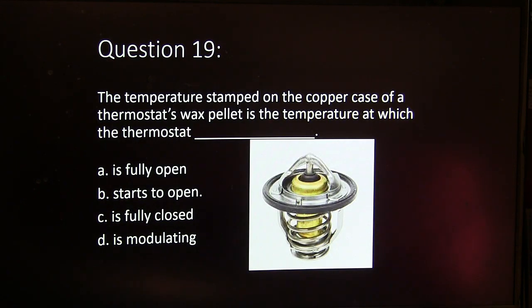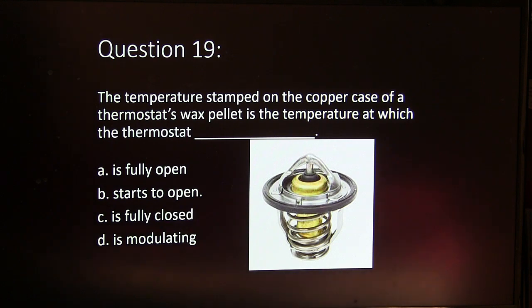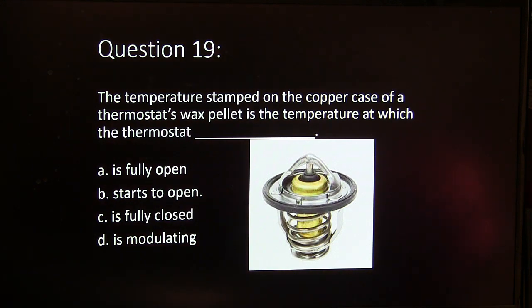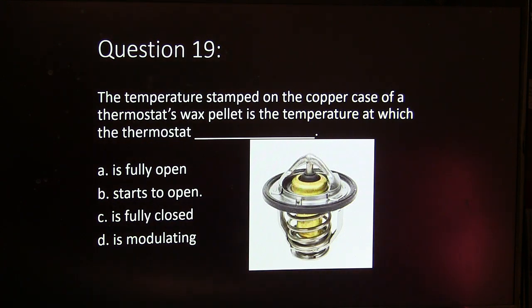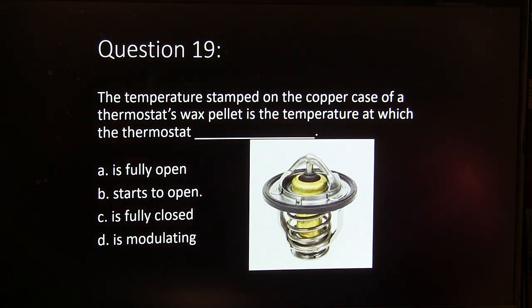Question 19. The temperature stamped on the copper case of a thermostat's wax pellet is the temperature at which what happens? A, the thermostat is fully open. B, it starts to open. C, it is fully closed. Or D, it is modulating.